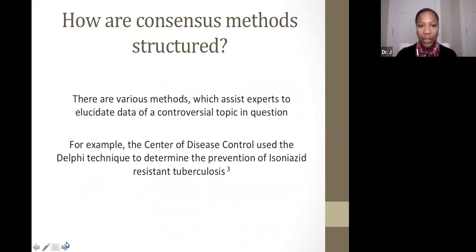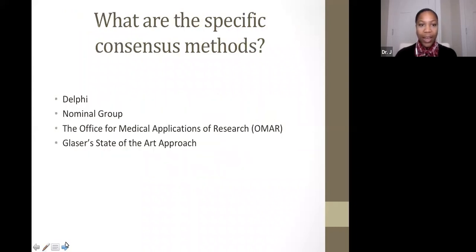So how are consensus methods structured? There are various methods by which experts can elucidate the data of different controversial topics. For example, the CDC used a Delphi technique specifically to determine the prevention of isoniazid-resistant tuberculosis. The specific consensus methods I'll cover are the Delphi technique, the nominal group, the Office for Medical Applications of Research — which I'll refer to as OMAR — and Glasser's state of the art approach.